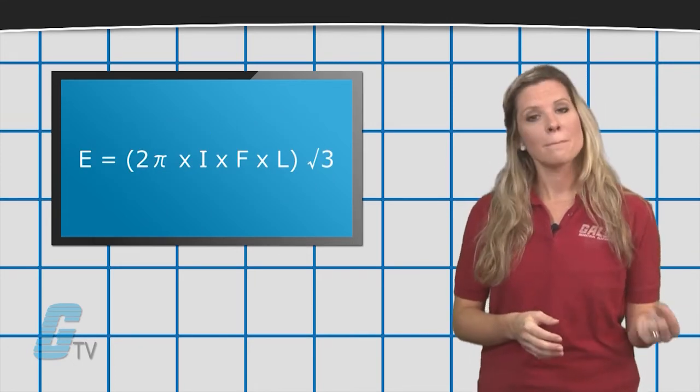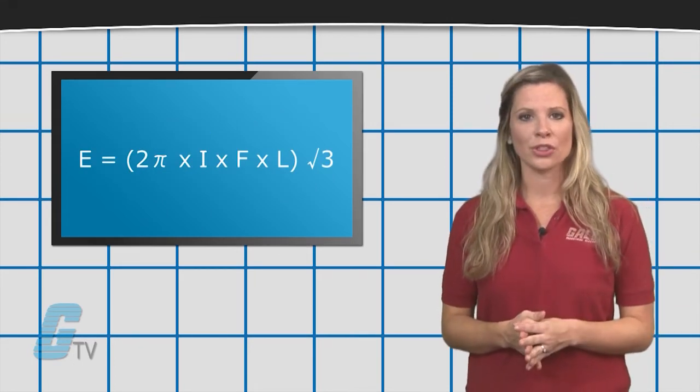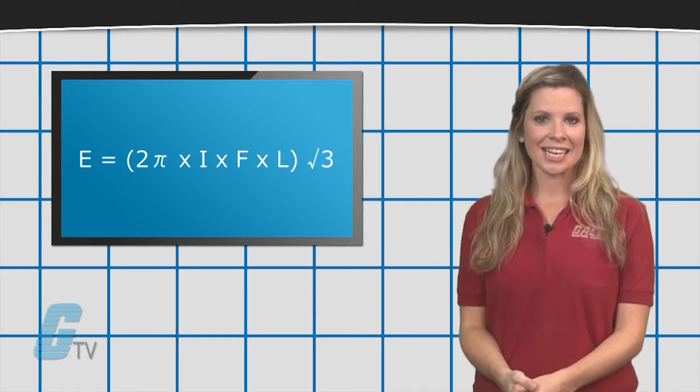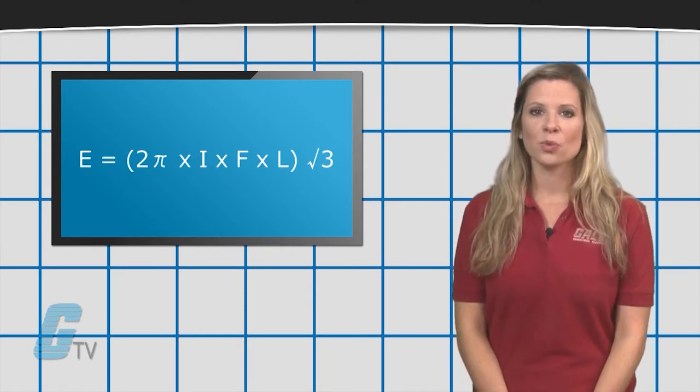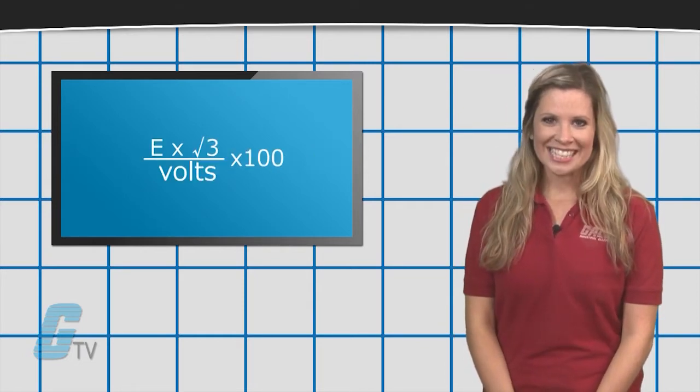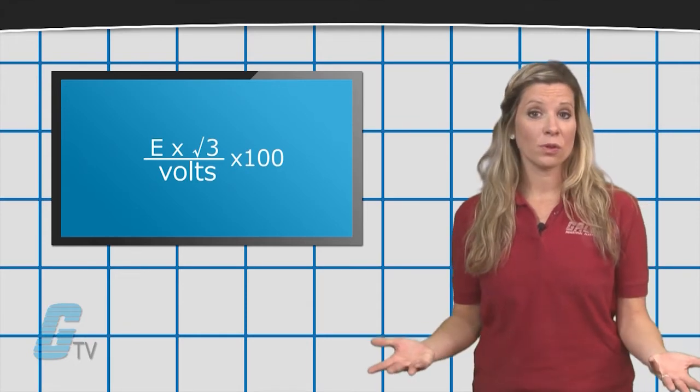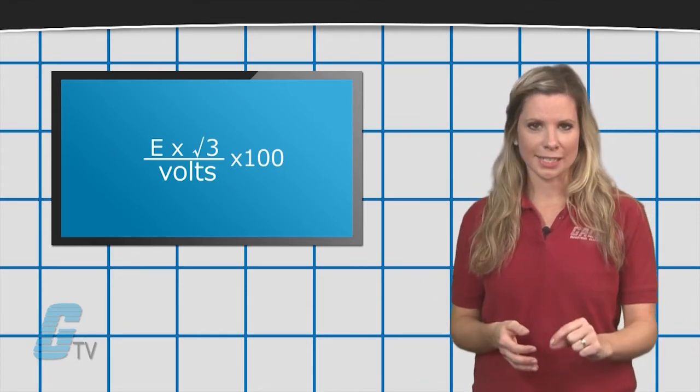To find the voltage drop, I will need to multiply 2 times pi with the current, frequency and inductance as well as the square root of 3. This number will then be divided by the voltage and then multiplied by 100 for a percentage.